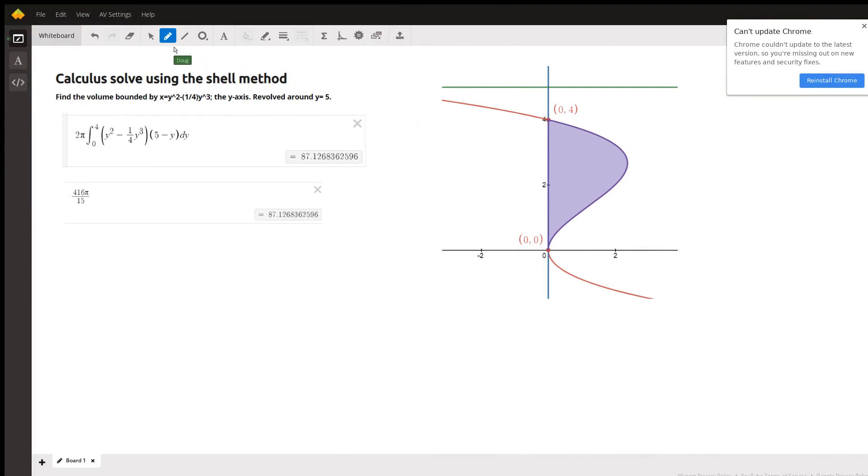Okay, we're going to revolve that purple area around the line y equals 5, that's this line right here. And we're going to use the shell method.